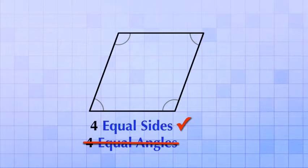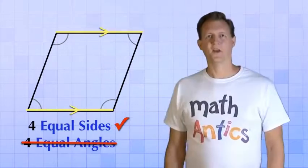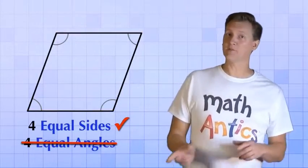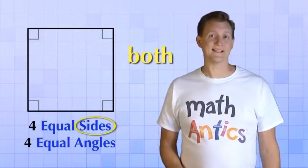And once again, just like the square and rectangle, the rhombus is made from two pairs of parallel sides. Okay, going back once more to our square, what if we try changing both the sides and the angles?